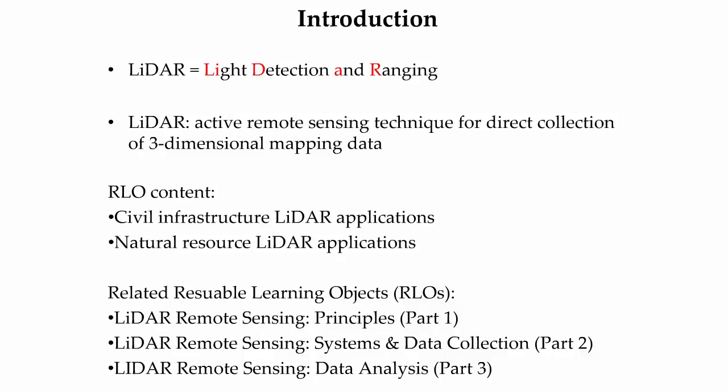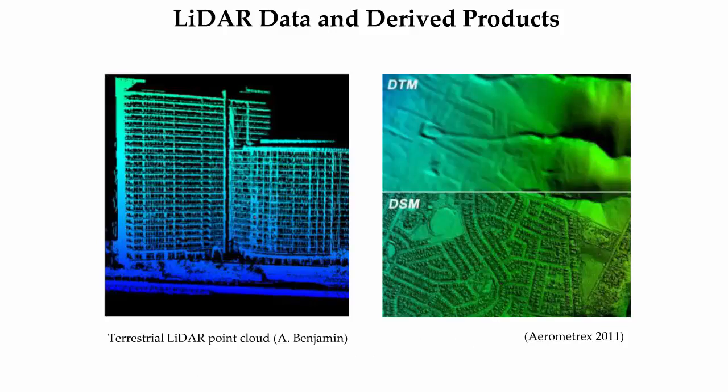Three related RLOs that cover basic principles, LiDAR systems, data collection, and data analysis are also available. In the third RLO in this LiDAR remote sensing series, LiDAR point clouds as shown on the left and LiDAR-derived products such as digital terrain models and digital surface models as shown on the right were introduced. This RLO presentation explores how LiDAR data and subsequent LiDAR-derived products are used in many diverse applications across both the built and natural environment.